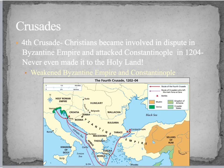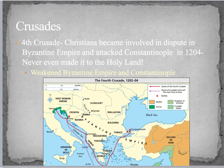In the fourth crusade, the Christians became involved in a dispute in the Byzantine Empire over who was the rightful ruler and actually attacked Constantinople in 1204 — they never even made it to the Holy Land. This is ironic because the Byzantines were the ones who started it by asking for help against invasions, and the crusaders invaded them instead. The crusades went on for about 200 years, with a series of crusades beyond the fourth one, but the Christians never gained any permanent territory in the Middle East.